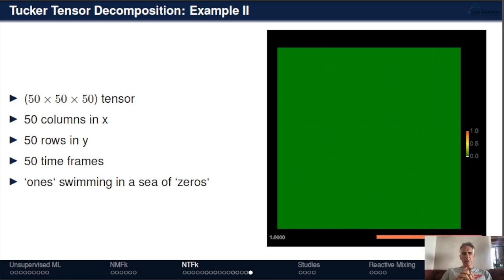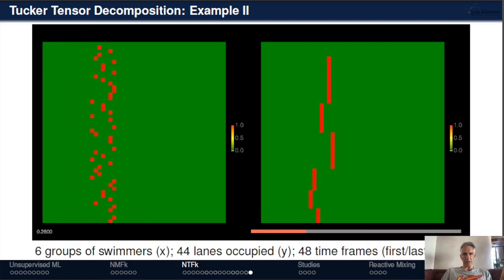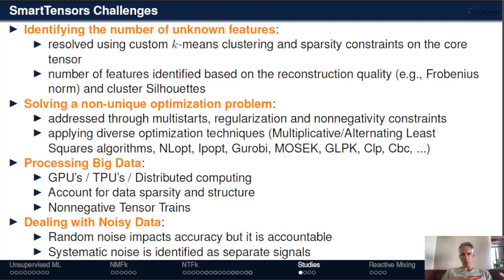Another example: assume a 50×50×50 tensor with 50 columns, 50 rows, and 50 time frames. There are ones (red dots) swimming in a sea of zeros, as shown in the movie. The goal is to analyze this data and identify swimmers moving at the same speed. The algorithm automatically identifies groups of swimmers and how they move in space — another demonstration of tensor decomposition in action.